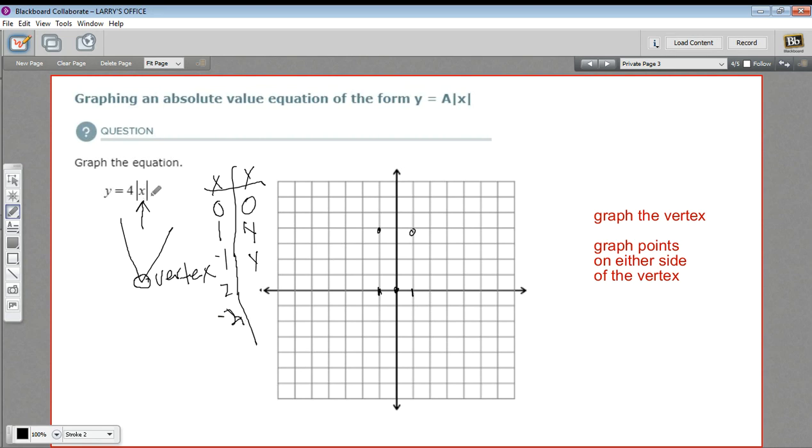So if you put in two here, the absolute value of that is two, times four is eight, so that's eight and that's eight. So I've got (2, 8) - actually that goes off my graph a little bit, but that's okay - and negative two, eight.